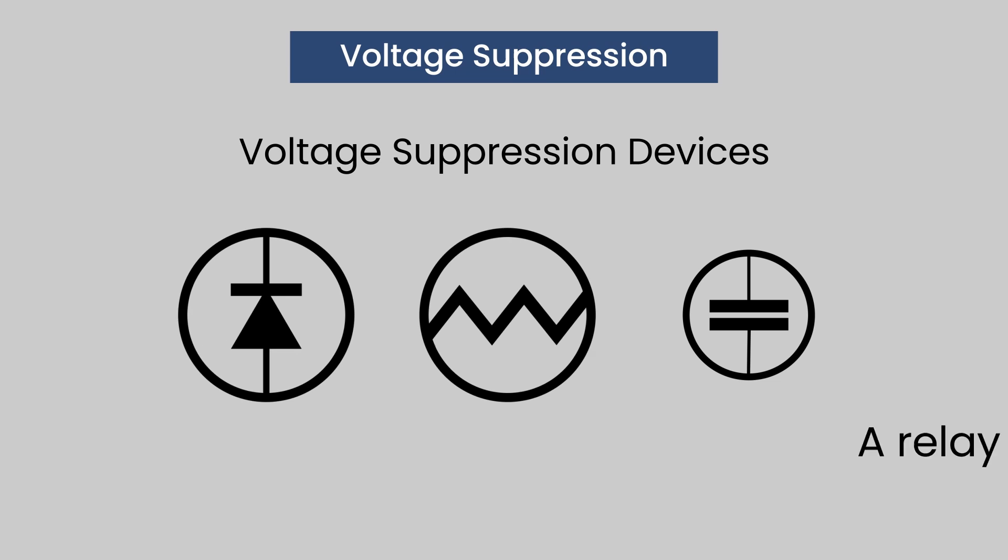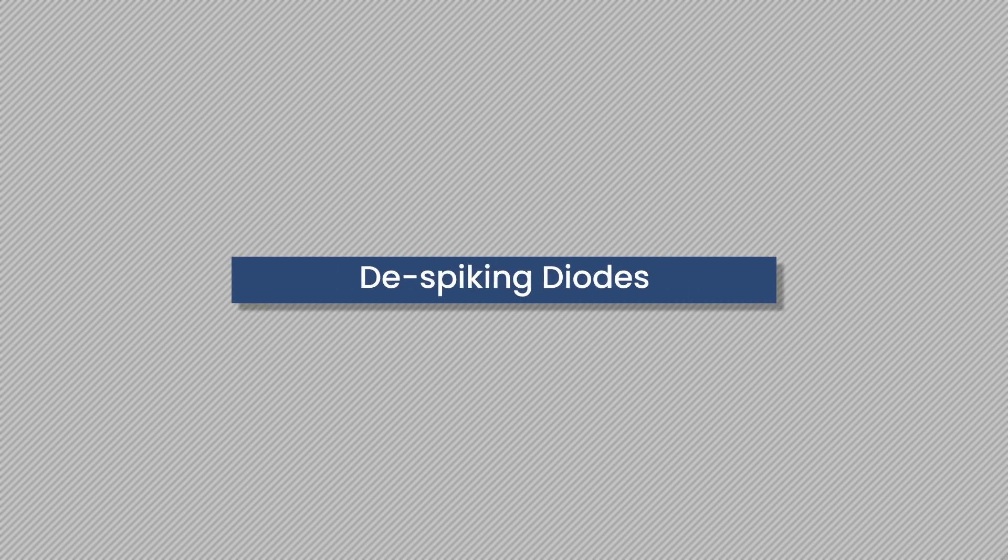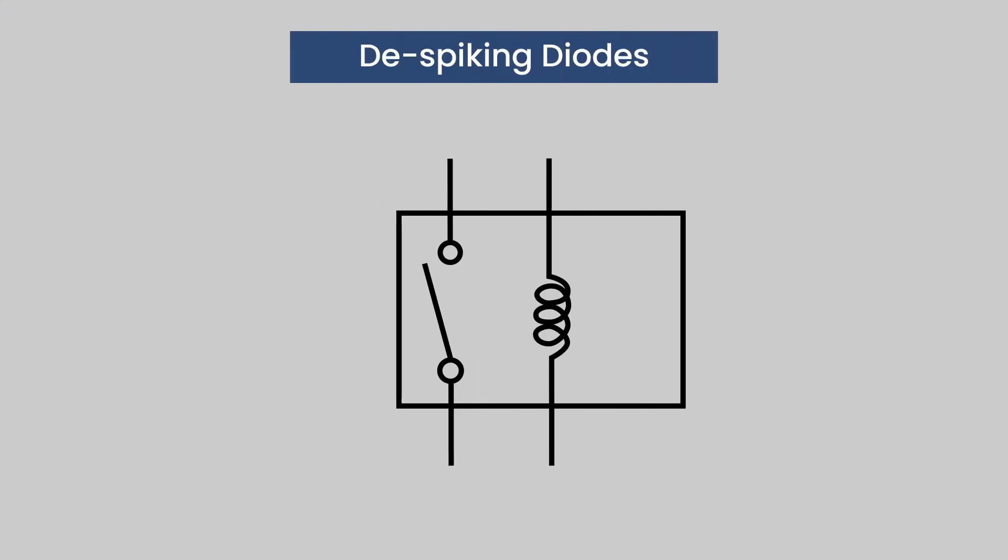A relay will be clearly marked if one of these is present. Relays with despiking diodes: a despiking or clamping diode is connected in parallel with the relay coil. When the relay is on, this diode will be in reverse orientation so that no current will flow through the diode.